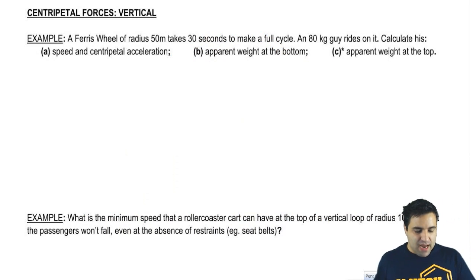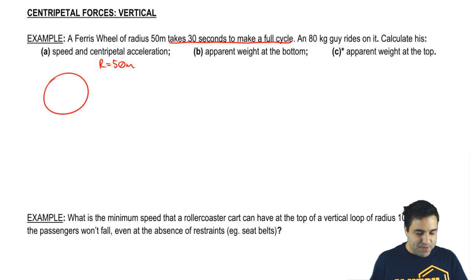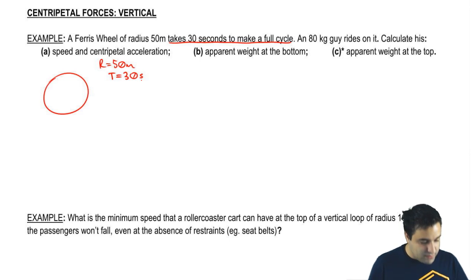We're going to start with an example here. I have a ferris wheel of radius 50, so let's write that. We've got a ferris wheel, let's draw a little circle, and the radius is 50, and it takes 30 seconds to make a full cycle. 30 seconds to make a cycle, that's the definition of period, time to make a cycle. So I can right away write that period equals 30 seconds. An 80 kilogram guy rides on it, so the mass of this guy is 80 kilograms.